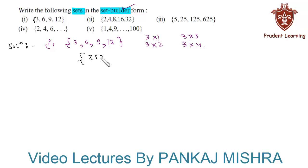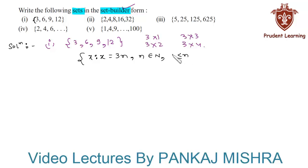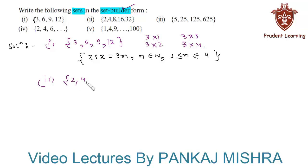So the given set can be written in set builder form as: X such that X = 3n, where n belongs to natural numbers and n is greater than or equal to 1 and less than or equal to 4.